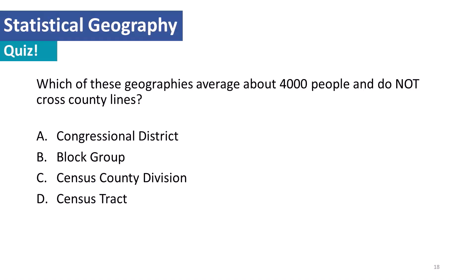Let's have a little quiz. Which of these geographies averages about 4,000 people and does not cross county lines? That is the census tract. As mentioned earlier, census tracts are relatively stable over time, created to have about 4,000 people. We try to keep them in the same place, but if a tract swells in population, we subdivide it and change the numbering scheme.